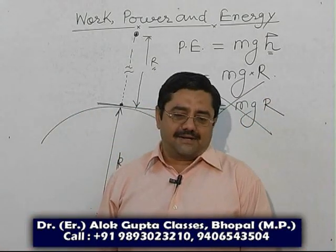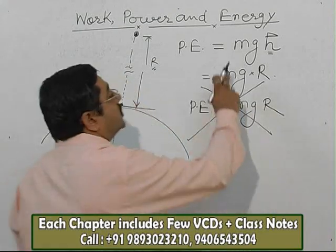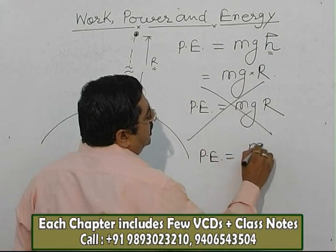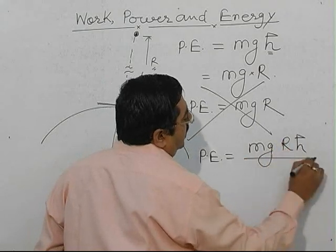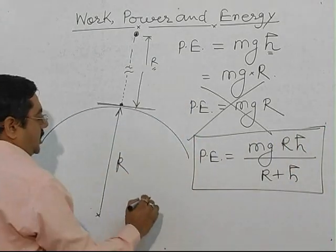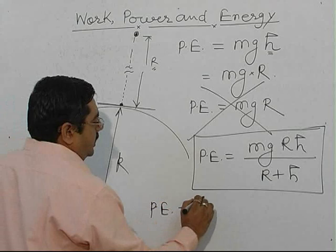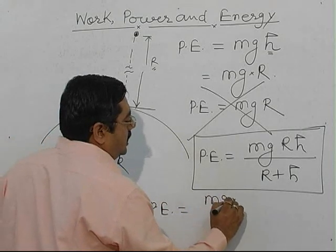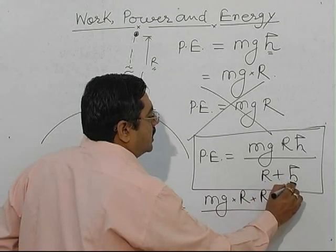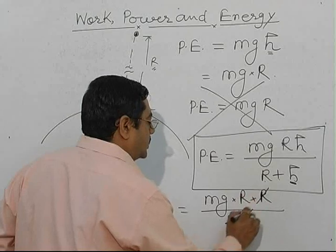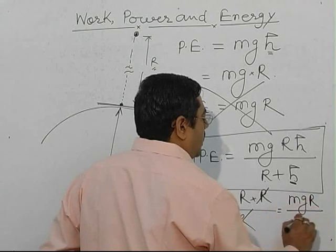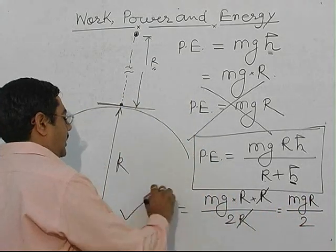This is not the actual formula — mgh is only an approximate formula. The actual formula for potential energy is mgRh upon (R + h). Note down. In this condition, gain in potential energy is mgr·h, where h is also r, so it becomes mgr·r upon (r + r) = mgr² upon 2r. One r cancels out, and the answer is mgr upon 2. This is the correct answer.